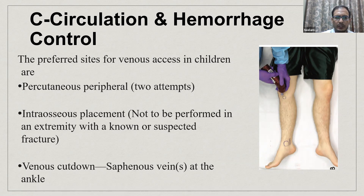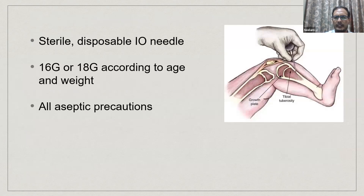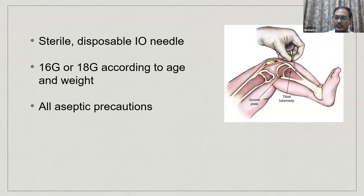In case of children, if two genuine attempts at peripheral IV access fail, proceed immediately to intraosseous (IO) access. Cutdown and central line placement take too much time in a trauma situation. A sterile disposable IO needle is used, placed at the most common site — the proximal tibia, just below and behind the tibial tuberosity — and it should be placed away from the growth plate. Size is chosen according to age, and all procedures should be done with aseptic precautions.